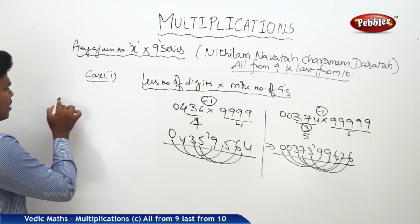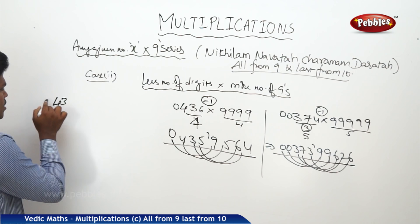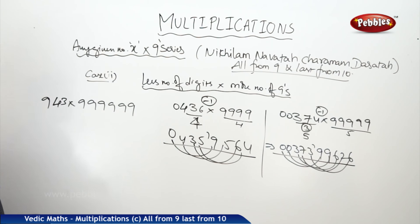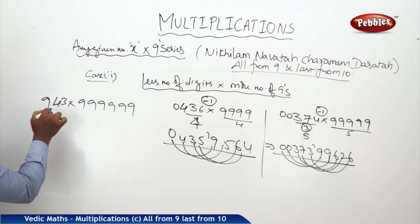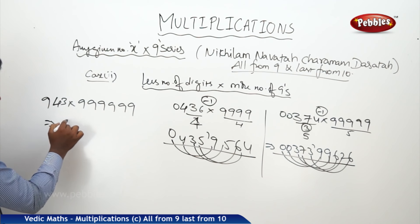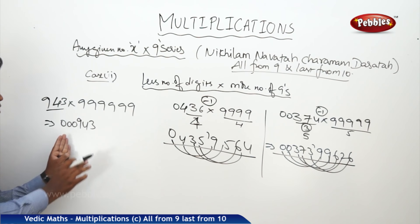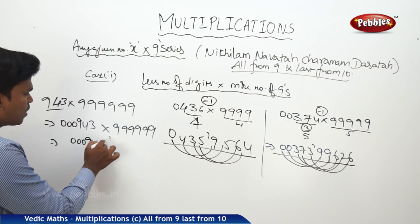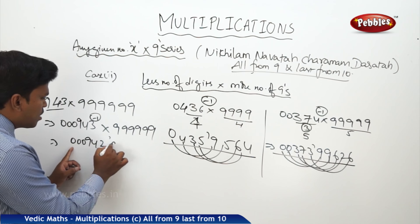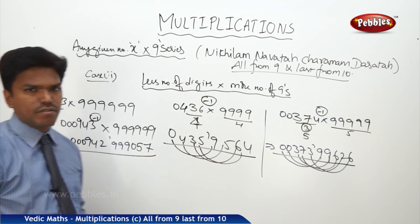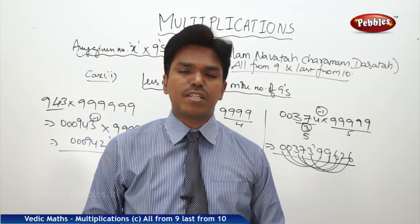One more example: 943 into six 9's. How many digits are less? 3 digits less. So add three zeros before the number: 000943. Now equal digits and equal nines — same as case 1. Subtract 1: 000942. Write 9's complements: 9, 9, 9, 0, 5, 7. Answer: 000942|999057. We convert case 2 into case 1 by simply adding zeros before the number.